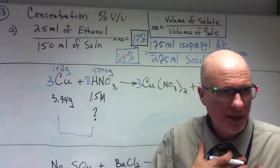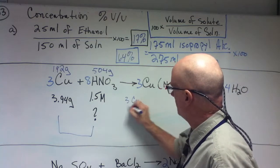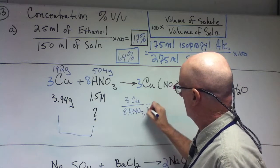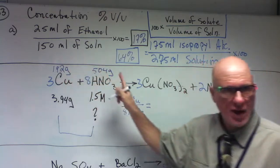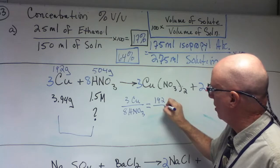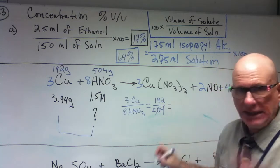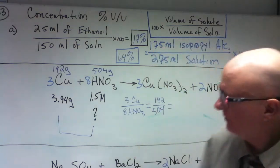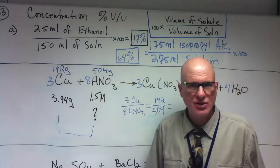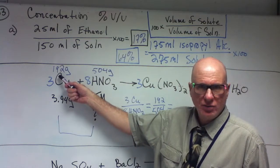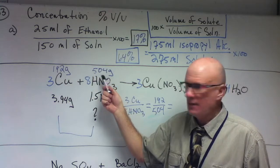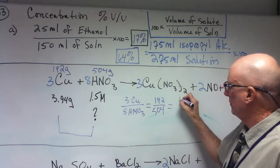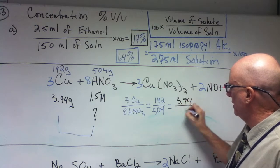So I know that my relationship is going to be 3 moles of copper over 8 moles of HNO₃. And I know that the known ratio, 192 over 504. So I know I have 3.94. 192 is to 504 as 3.94 is to X.